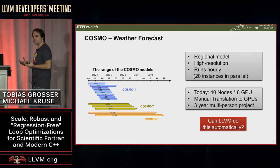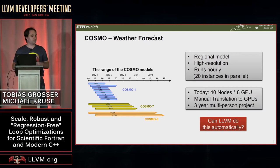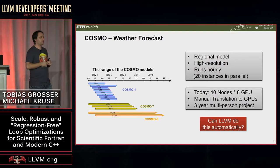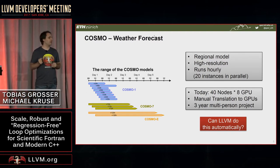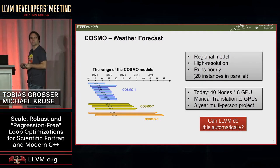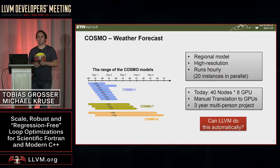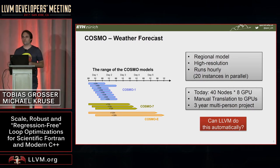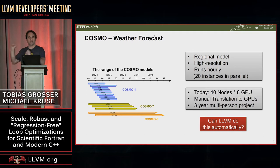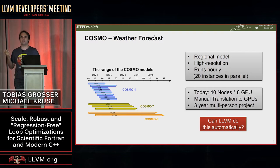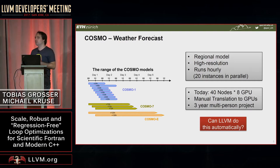One of the recent advances in weather forecasting in Switzerland is that instead of running one weather forecast each hour, we now run 20 weather forecasts each hour, because it's very unreliable. Having 20 data points gives probabilistic estimates for the next day. We use this Cosmo weather forecast model — a regional model at high resolution, meaning one square kilometer. The big mountains in Switzerland become very small hills at that resolution, so it's still very imprecise.